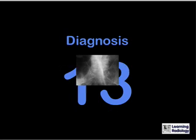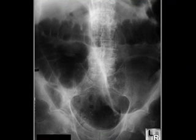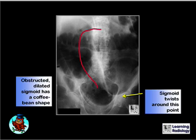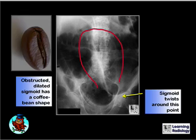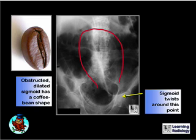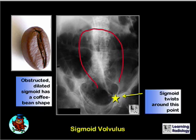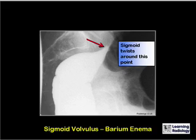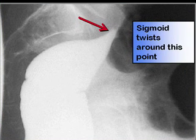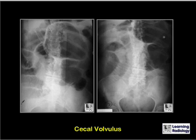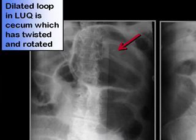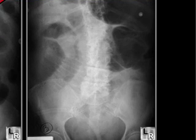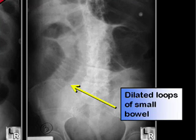This is Diagnosis 13. Why is the abdomen of this 83-year-old man distended? There is a very large dilated obstructed loop of large bowel in the shape of a coffee bean, representing a sigmoid volvulus. The sigmoid has volvulated around the point approximately where the yellow star is. A barium enema would be obstructed at the point of twisting. Also shown is a less common cecal volvulus, in which the cecum rotates into the left upper quadrant, with multiple dilated loops of small bowel due to proximal obstruction.